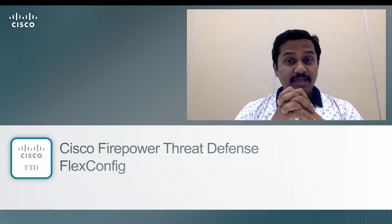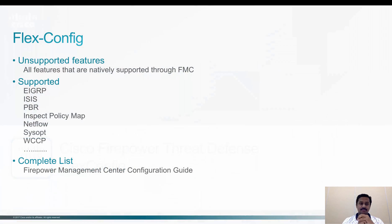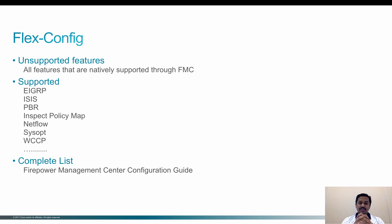FlexConfig does not support features that are natively supported by the FMC, like access control policy or VPN — those features cannot be configured through FlexConfig. The supported features with FlexConfig are EIGRP, ISIS, PBR, and inspect policy map — features which are not natively supported by Firepower Management Center. For the full list of features, please refer to the Firepower Management configuration guide.